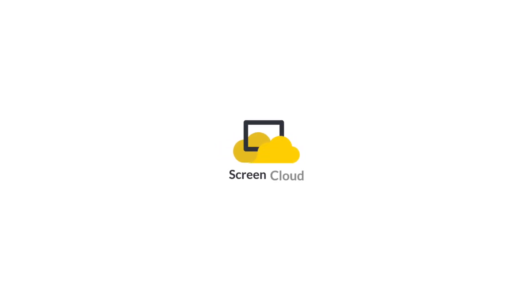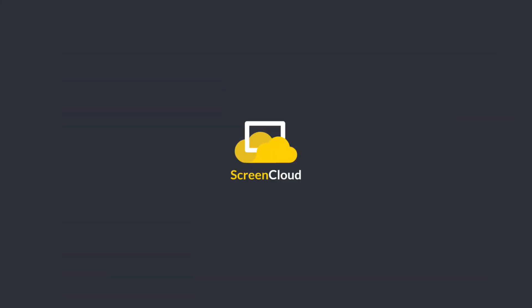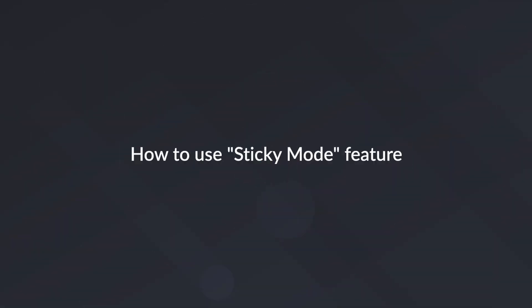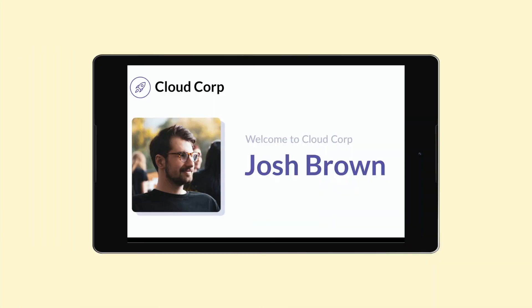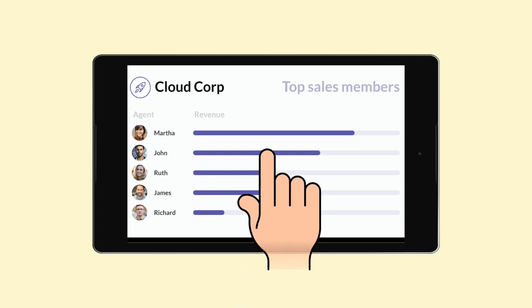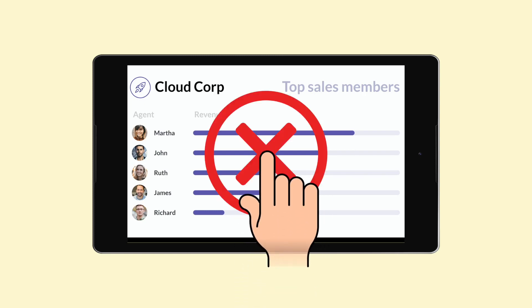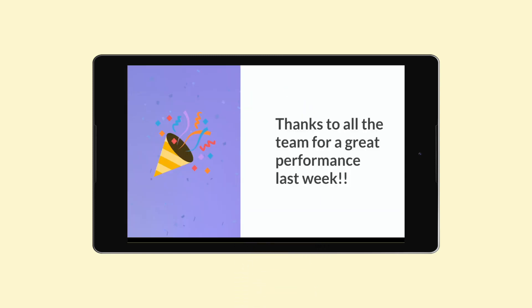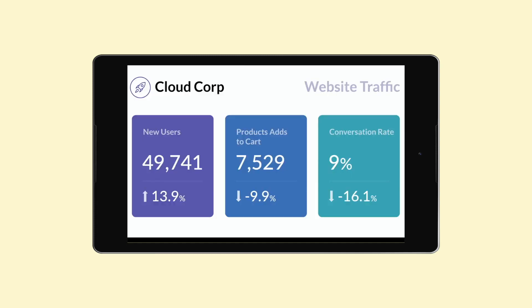Using ScreenCloud's digital signage app, you have the ability to lock the app on Android or Amazon devices with our sticky mode feature. Sticky mode mimics what is generally known as kiosk mode, which locks down the app and only allows one application at a time to run. This is useful for businesses using digital signage to have more security over devices and reduce the likelihood of any service interruptions occurring.